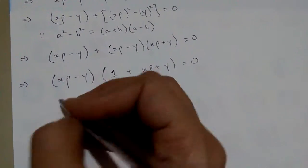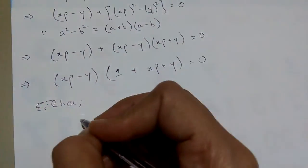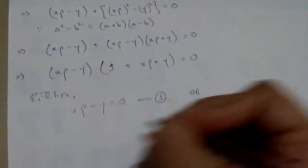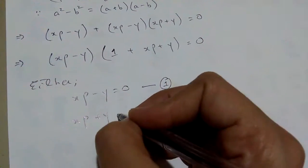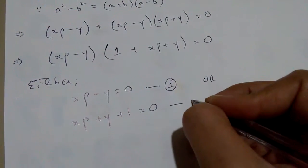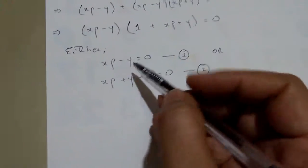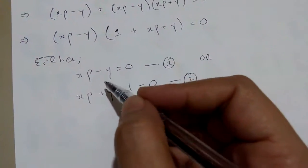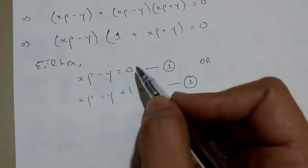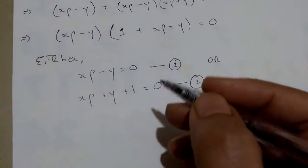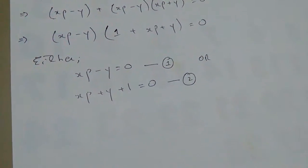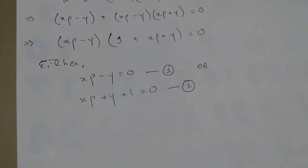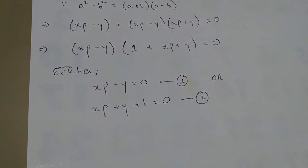The product of these two factors is zero, so either the first factor equals zero (equation number one) or the second factor equals zero (equation number two), or maybe both. That's why the product is zero. We now have two first order, first degree differential equations — ODEs. Since these are first order first degree ODEs, we can solve them through the methods discussed in previous videos, choosing the best fit after analyzing each equation.